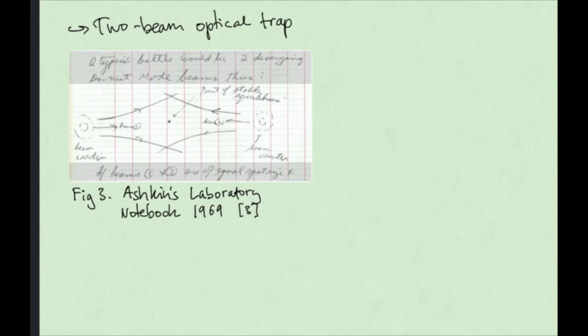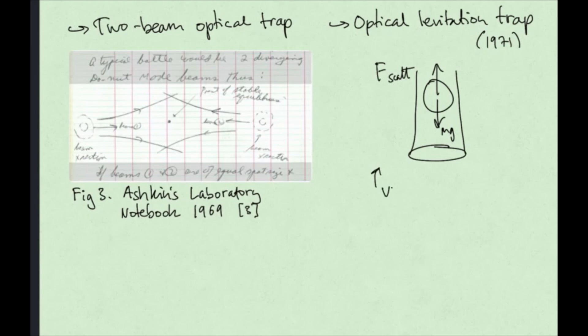Ashkin developed a two-beam optical trap, where the scattering forces from two lasers would cancel and the particle would be trapped in the center. He then worked on an optical levitation trap, where the particle's weight would balance the scattering force. This, however, would not be stable if moved, so he kept experimenting.